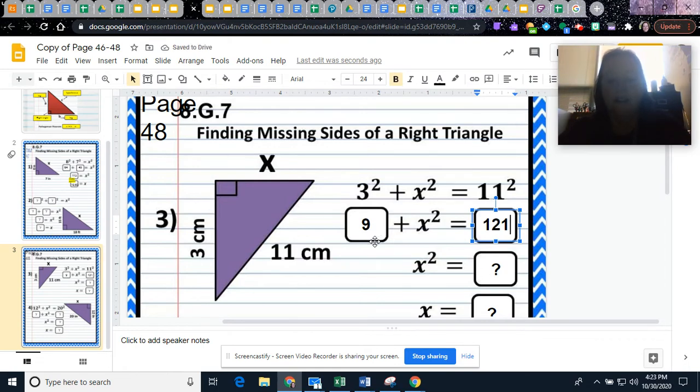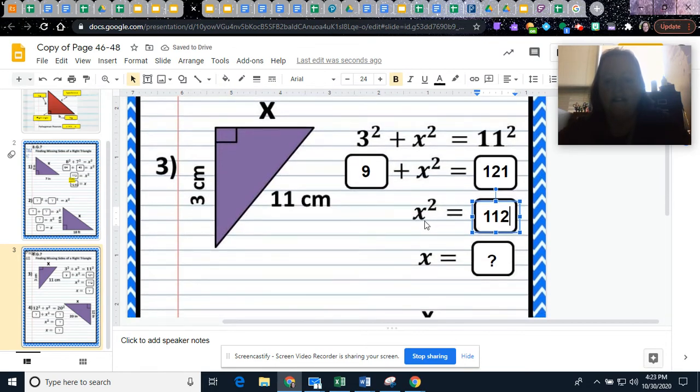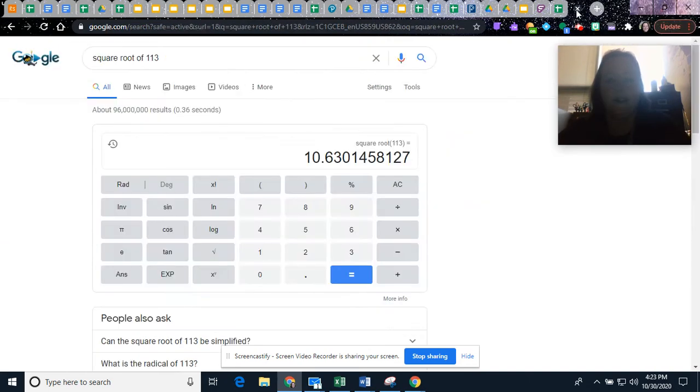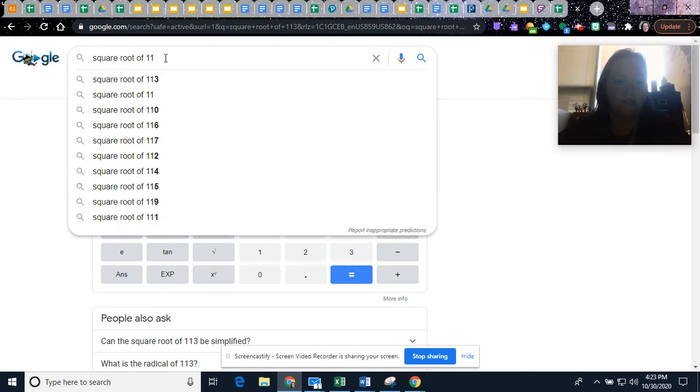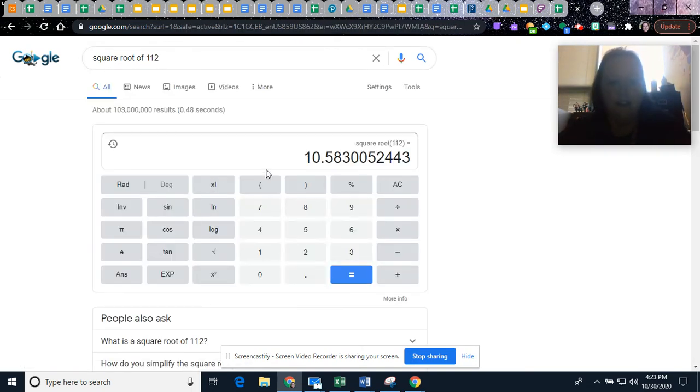Now, think about how we solve equations. We want to get the x by itself. We need to move the 9 over here. This time, instead of adding, we are going to subtract. If I take 121, subtract 9, I get 112. I have x squared equals 112. The opposite of squaring a number is to square root. If I square root 112, I get 10.58 when I round.